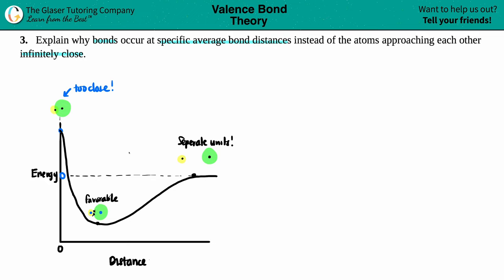Okay, so this question is basically alluding to this little graph over here. And this is the graph that represents what happens to the energy when you have one atom, so a green atom, trying to bond with the other atom, which is the yellow one over here.